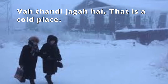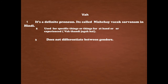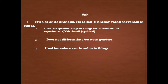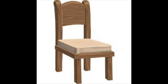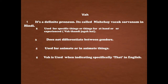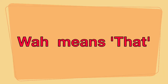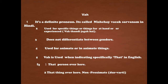For example, vaha thandi jaga hai means 'that is a cold place.' Vaha is used for 'that' in English. Similar to yaha, it does not differentiate between masculine and feminine gender, and it is used for both animate and inanimate — living and non-living — things. Vaha is used when indicating specifically 'that' in English, referring to a person or thing over there, at a distance. In Hindi this is called durvarti.